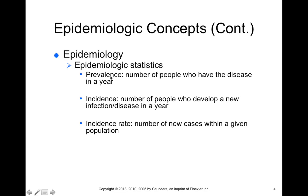So the prevalence of HIV in the U.S. would be 1.2 million people. Incidence, however, is the number of people who develop a new infection or disease in a given year. The incidence of HIV in the U.S. is approximately 50,000 new infections every year. So prevalence is total number, and incidence is the number of new infections, both in a given year.